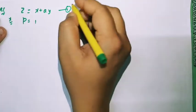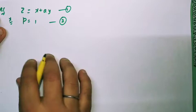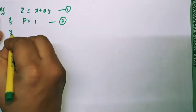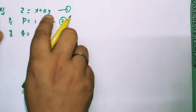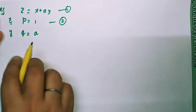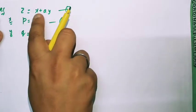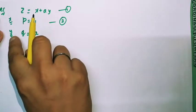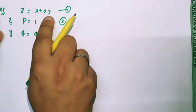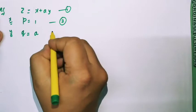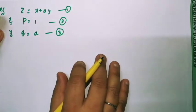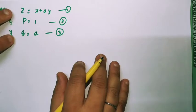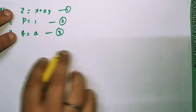So the second equation is p = 1. Now differentiating partially with respect to y: q = ∂z/∂y = a, because the x term gives 0 and ay gives a. This is the third equation: q = a. Now look carefully at the first and third equations — we also have the second equation which we will discuss further. Here q = a gives us the value of the arbitrary constant.